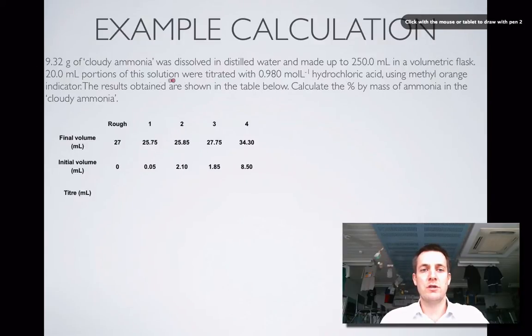Then 20 mL portions of this solution were titrated. So this presumably was the aliquot from our pipette. They were titrated with 0.980 mole per liter hydrochloric acid which must have been in our burette. And we've used methyl orange indicator which, as we should know, changes color in the acidic range. The results obtained are shown in this table. Calculate the percentage by mass of ammonia in the cloudy ammonia.